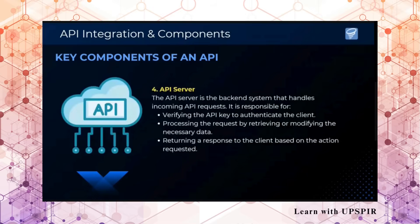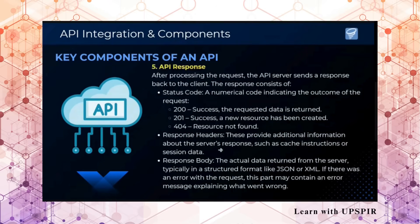Then we have the API server — this is where the API services are hosted. It verifies the API key coming from the client side, processes the request by retrieving or modifying the necessary data, and returns the response to the client. For the API response, there is a status code — 200 is for success, 201 is for success when a new resource is created, 404 is not found, and there are other errors. There are also response headers providing additional information, and a response body containing the actual data.